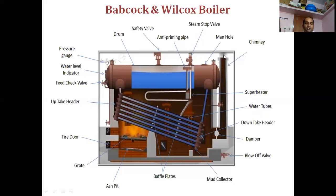First of all, water is taken into the boiler shell with the help of the feed check valve. Water is passed into the drum-shaped shell and filled up to three-fourths of its entire size; one-fourth portion is left for the collection of steam. The level of water is checked with the water level indicator. As the water is filled, some amount of water passes through the tube to the downtake header, where a set of inclined tubes are present through which the water is stored.